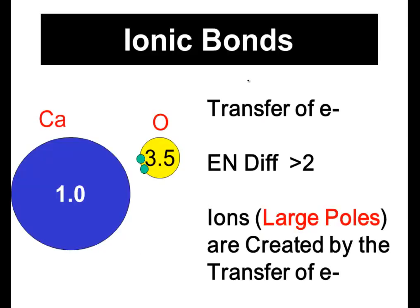Lastly, ionic bonds, they don't deal with the sharing or the uneven sharing. They deal with the transfer of electrons. What I'm trying to demonstrate in this picture here is that I have an element like oxygen which has an electronegativity rating of 3.5 and calcium. Calcium is a very large element. It's bigger than oxygen and it has a low electronegativity value. And when you subtract 3.5 minus 1...